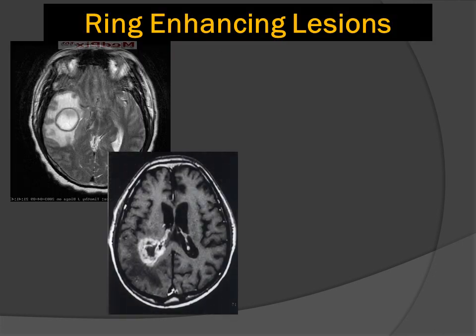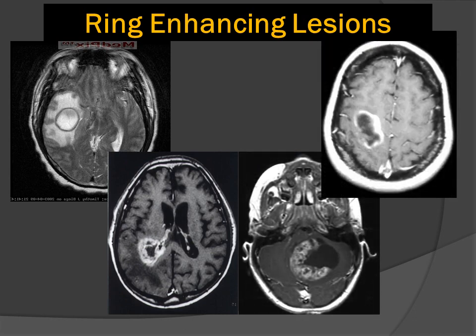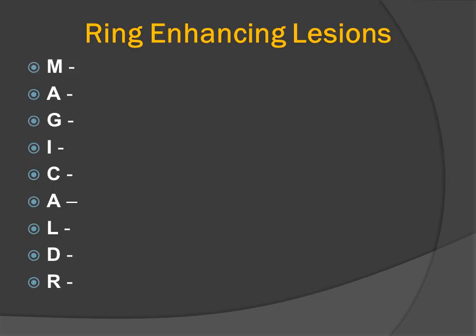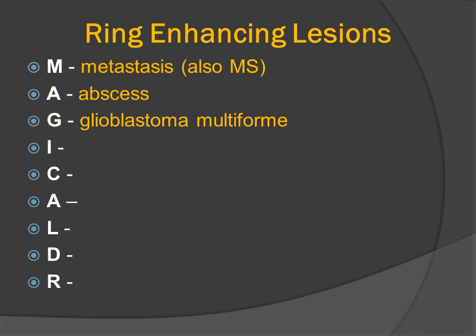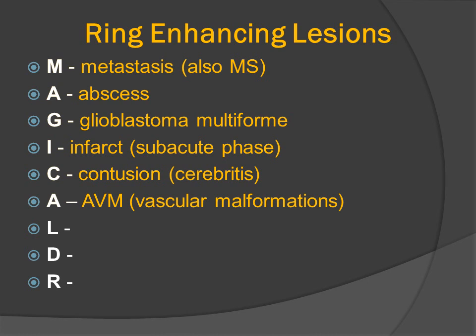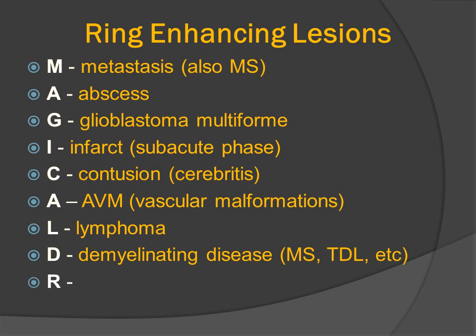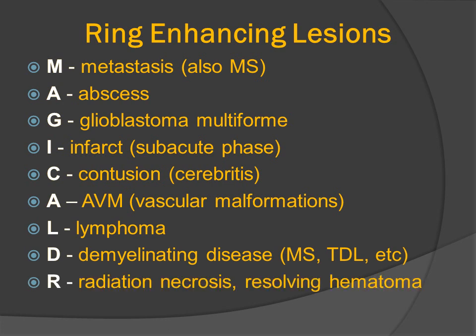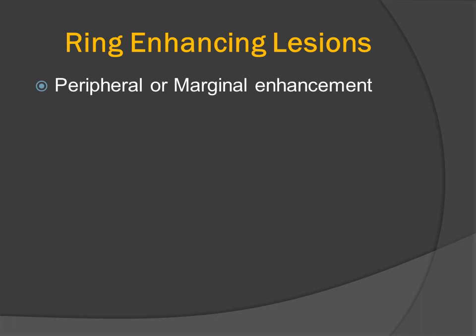Ring-enhancing lesions are a very common differential diagnosis in neuroimaging. Here we see four different patterns of ring-enhancing lesions. Many people use the mnemonic MAGIC DOCTOR or MAGICAL DOCTOR to remind themselves of the many different kinds: metastatic disease and multiple sclerosis, abscess, glioblastoma multiforme, subacute infarcts, cerebritis and contusion, AVMs and vascular malformations, lymphoma, demyelinating disease including tumefactive demyelinating lesions, and radiation necrosis or resolving hematomas.